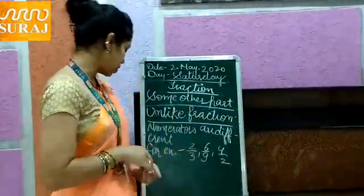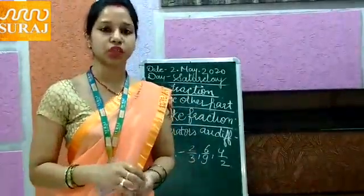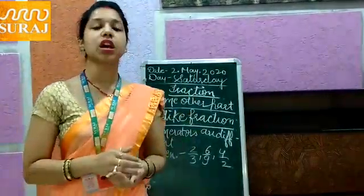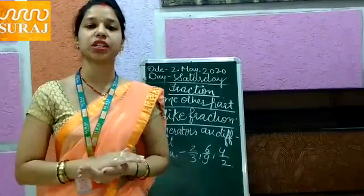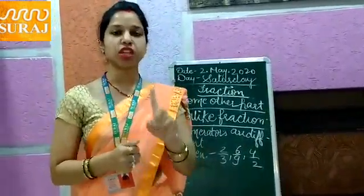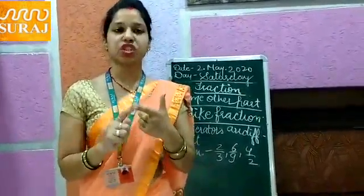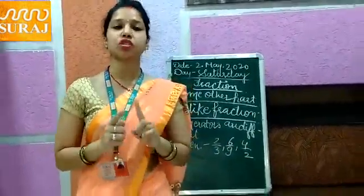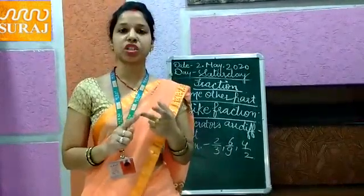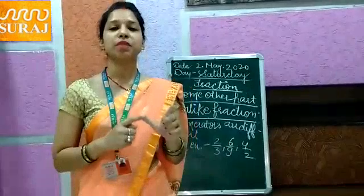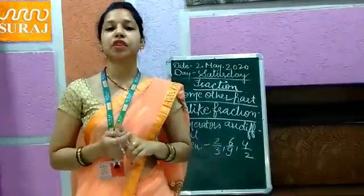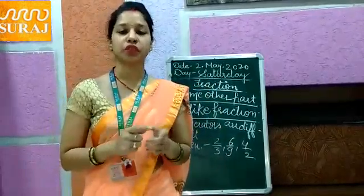Okay students, this is our friction topic discussed in this video. Now I am revising all that we have studied. Firstly, friction — the number which is in A upon B form is known as friction. Types of friction: unit friction, improper friction, proper friction, mixed friction, like friction and unlike friction. Unit fraction — numerator is one. Improper fraction — numerator is more than denominator. Proper fraction — numerator is less than denominator. Mixed fraction — there are two parts: whole part and fractional part. In like friction the numerator is same and in unlike friction the numerators are different. Thank you so much.